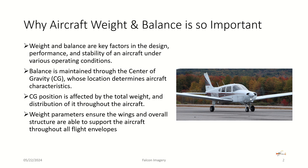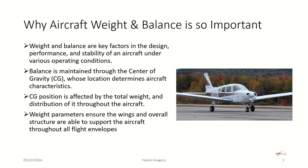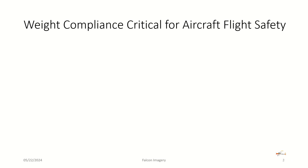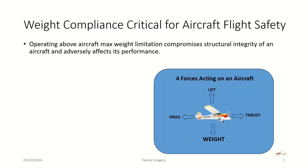Weight parameters ensure the wings and overall structure are able to support the aircraft throughout all flight envelopes. Prior to every flight, pilots must determine the weight and balance to ensure the aircraft is operated in accordance with the Pilot Operating Handbook, or POH. Weight compliance is critical for aircraft flight safety. Operating above the aircraft max weight limitation compromises structural integrity and adversely affects performance. If the weight is too great, the plane may not make it off the ground. Even if it does get off the ground, turbulence or significant movements could structurally damage the aircraft — bending metal, breaking metal, ripping off a wing, or losing part of the tail section. That's why it's so important to make sure the aircraft is not exceeding the max gross weight before takeoff.